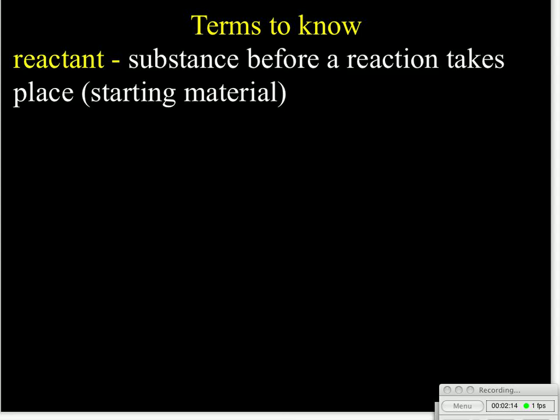So before we start getting into the process, there's a few background terms that we should know. Some of these are ones that we covered earlier this year, and one of them is new. The first one is a reactant. We covered this last month. A reactant is just one of the substances that's present before the reaction takes place. It's one of your starting materials for a reaction.